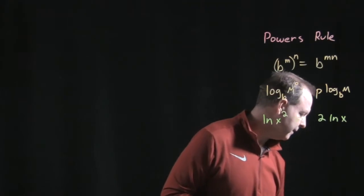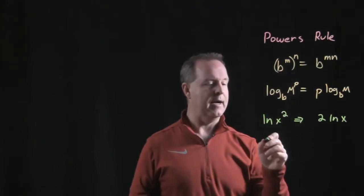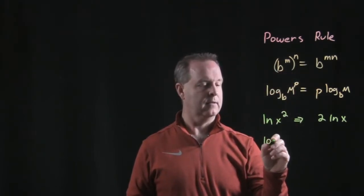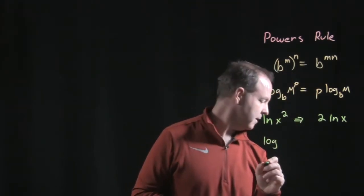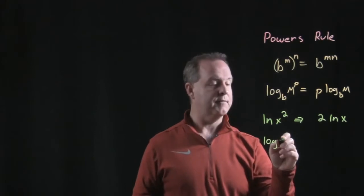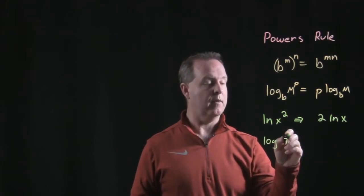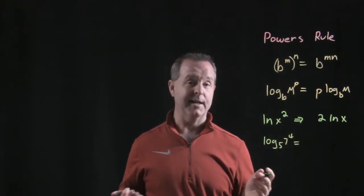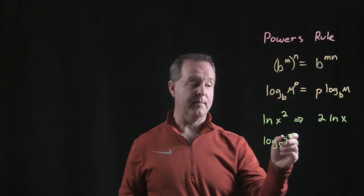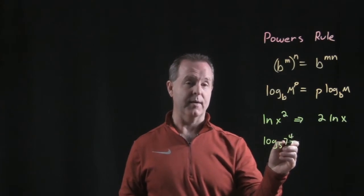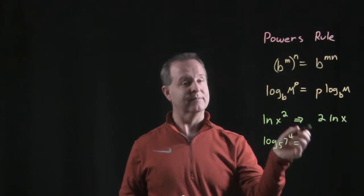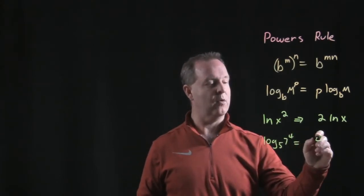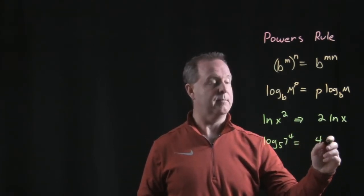If I have the log of 7 to the 4th, base 5, I can just rewrite that by taking the exponent and dropping it out front. So it's 4 times my log base 5 of 7.